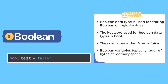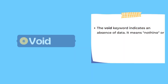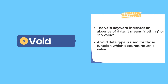The fifth primary data type is boolean. Boolean is used to store boolean or logical values, meaning it can only store true or false. The keyword used to define a boolean variable is bool, and it takes one byte of memory.